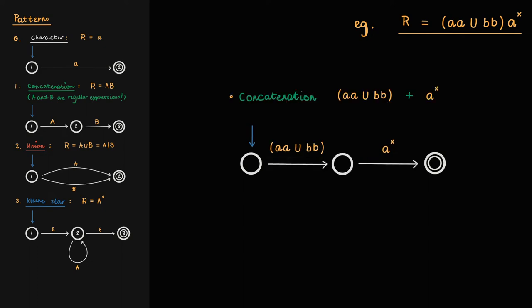The left-hand side of the concatenation is a union of two expressions, aa and bb, so we can replace its transition in the NFA with the union pattern.